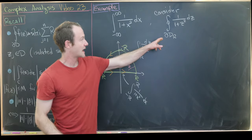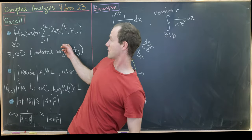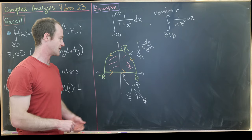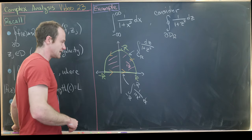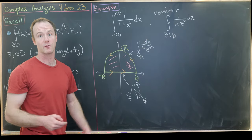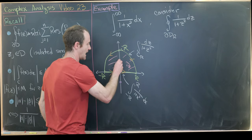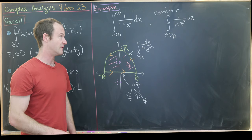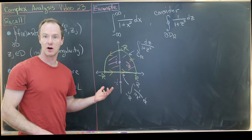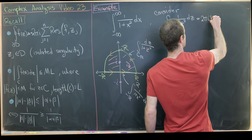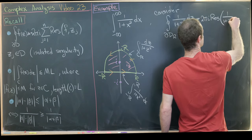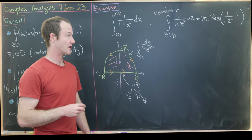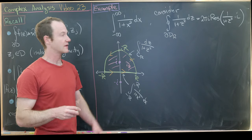We can calculate this integral two ways: using the residue formula and by hand. The singularities of 1 over (1 + z²) occur where the denominator is zero, which gives us z = ±i. We have −i below the real axis and +i above it. Only i is within D_R, so that's the only one we need to worry about. This is a pole of order 1, so calculating the residue isn't too bad.